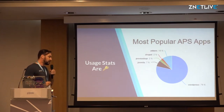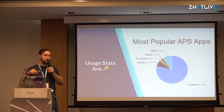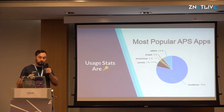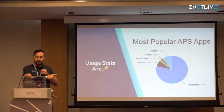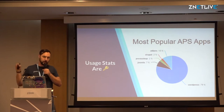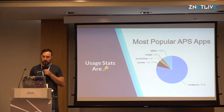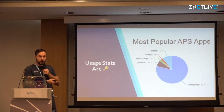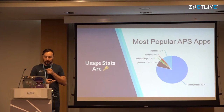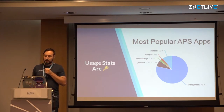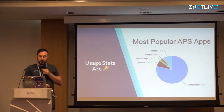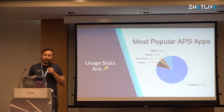For example, our decision to create WordPress Toolkit back in 2014 was based on the fact that roughly 80% of all applications in Plask from our APS catalog — which stored all applications provided to customers — were WordPress. That's hundreds of thousands of sites, and that doesn't count WordPress sites installed manually without the APS catalog. Everything else, as you can see on the graph, was not even close, and the gap is actually getting bigger as we speak.